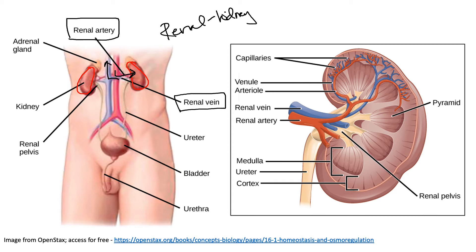Other parts of the urinary system include the ureters — a pair of ureters whose job is to carry urine produced by the kidneys to the bladder. The bladder holds that urine until a time when you're ready to release it. A sphincter muscle controls the release of urine, and when it opens, urine travels through the urethra to exit the body.